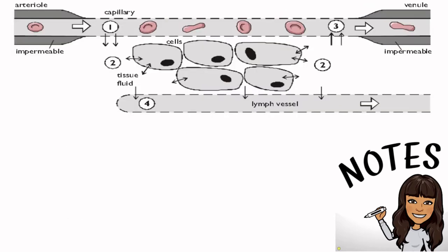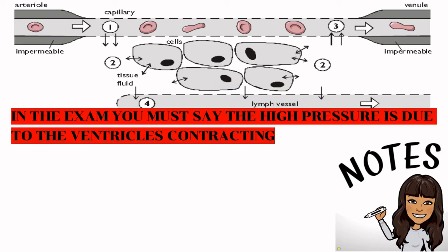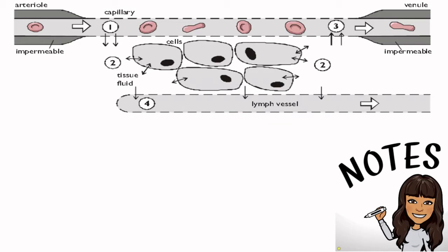Now let's look at how tissue fluid is actually formed. This image shows the arterial end on the left and the venule end on the right. At the arterial end, blood arrives at a high hydrostatic pressure, created by the contracting of the heart muscle. This high pressure forces water, ions, monomers, and some hormones out through the gaps in the capillary walls — highlighted by the dotted lines on the diagram. Larger proteins and blood cells remain in the capillary as the gaps are not big enough for them to pass through. This process is known as ultrafiltration, happening at point one on the diagram.